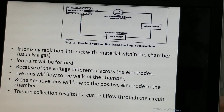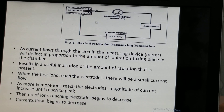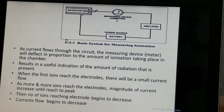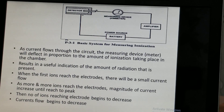When current flows through the circuit, the measuring device — the meter — deflects in proportion to the amount of ionization that takes place in the chamber. As a result, we get a useful indication of how much radiation is present in that area. When the first ions reach the electrodes, there is a small current flow.